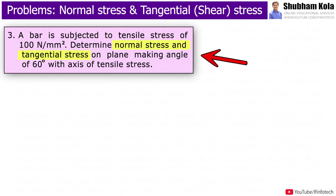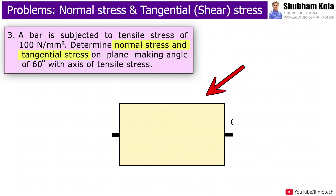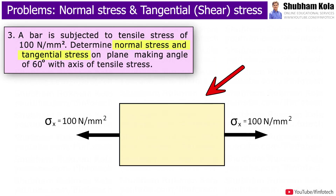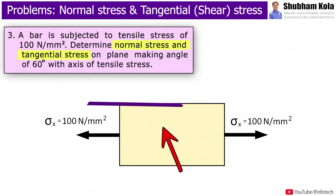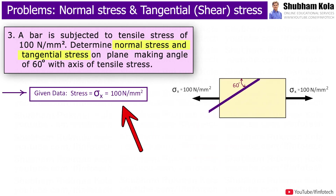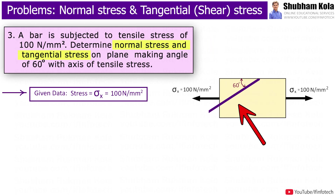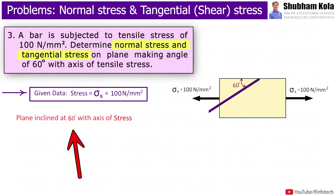For the next problem, the statement is: a bar is subjected to a tensile stress of 100 N/mm². Determine the normal stress and tangential stress on the plane making an angle of 60° with the axis of tensile stress. The given data is: tensile stress σx = 100 N/mm², and we have to calculate normal stress and tangential stress, i.e., shear stress, on the inclined plane at 60° with the horizontal axis.